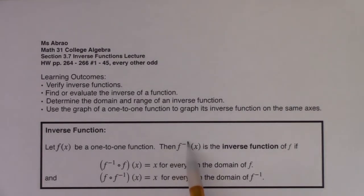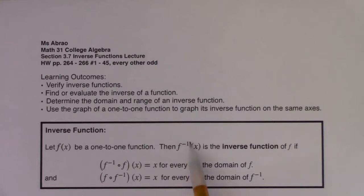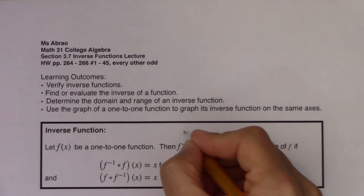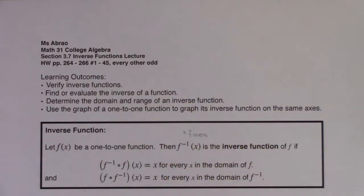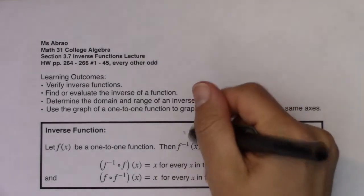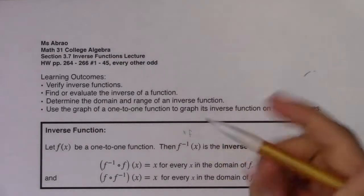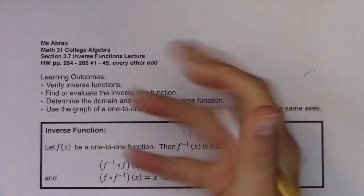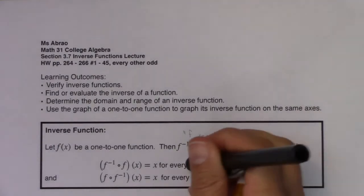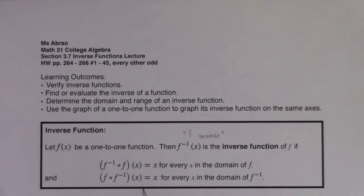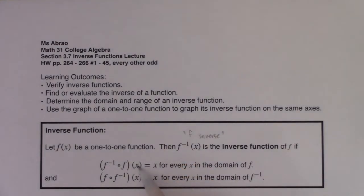Here is our notation. You have f with a superscript of negative one, and we call that the inverse function of f if two conditions are met. We call this f inverse — that's how I would say it out loud. The two conditions that have to be met are: you have to be able to compose them in either direction, meaning you do f inverse of f of x, or f of f inverse of x. When you compose these two functions and plug in x, if you get x back out, they're going to be inverse functions.